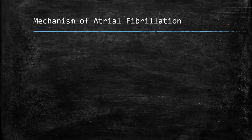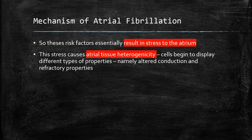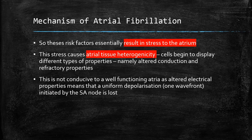There are two main theories regarding the mechanisms of atrial fibrillation. The risk factors of atrial fibrillation cause stress to the atrium, inducing a change in atrial tissue — atrial tissue heterogeneity, where cells display different properties, namely altered conduction and refractory properties. This results in the loss of one wavefront, the P-wave on the ECG, which causes enormous depolarization and causes several smaller wavefronts to develop: the fibrillation waves.